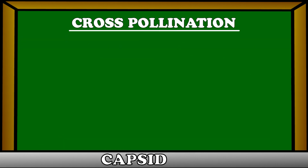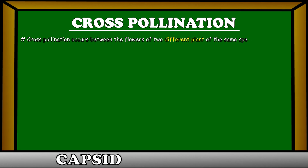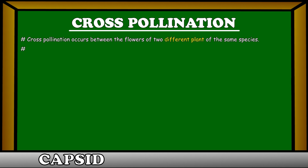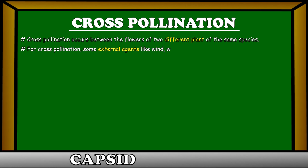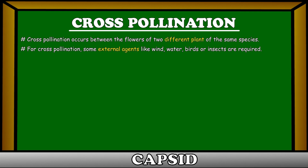Let's talk about cross-pollination. Cross-pollination occurs between the flowers of two different plants of the same species. For cross-pollination, some external agents like wind, water, birds, or insects are required.